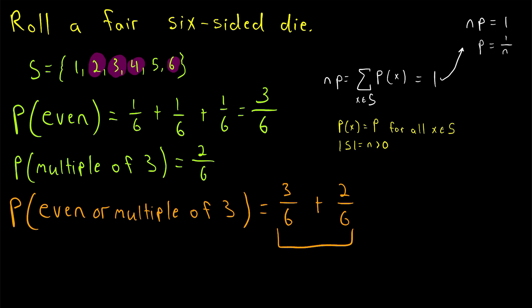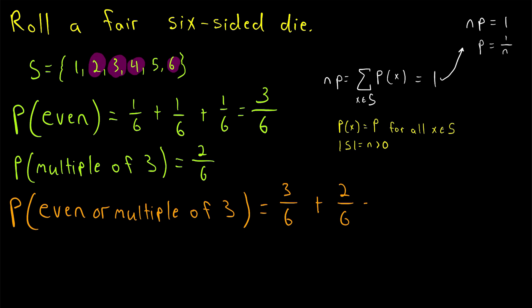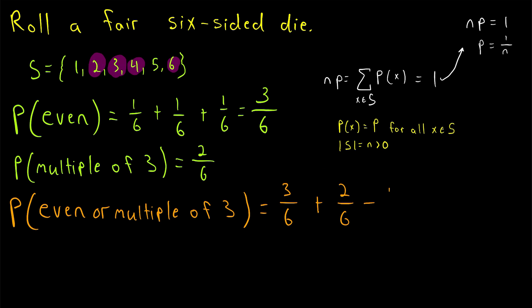This type of strategy — adding probabilities — works and is very useful; there's just one thing we need to be careful about. The problem is that 6 is both even and a multiple of 3, so it's being counted twice when we add these probabilities. To correct this answer, since we counted the probability of 6 occurring twice, we need to subtract it once. That corrects our answer, giving us the expected probability of 4 over 6.